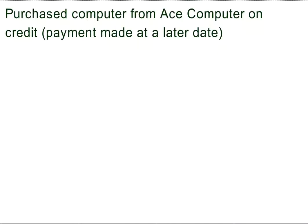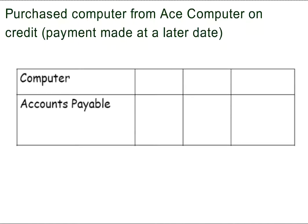You purchased a computer from Ace Computers on credit. This means that payment will be made at a later date. What two accounts are affected? Computer and Accounts Payable. Note that the Accounts Payable is set up as Accounts Payable slash Ace Computer — this indicates the business to whom the money is owed. Computer is an asset account. The Accounts Payable is a liability account.